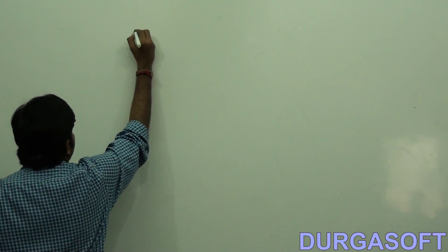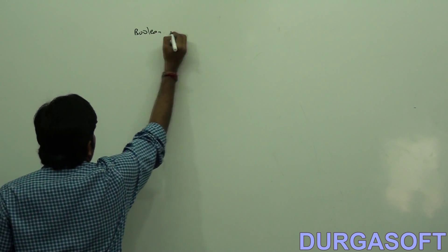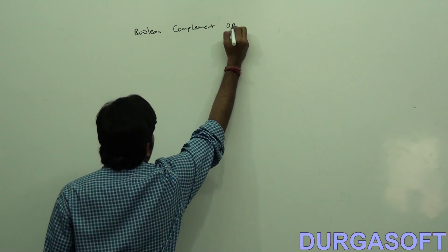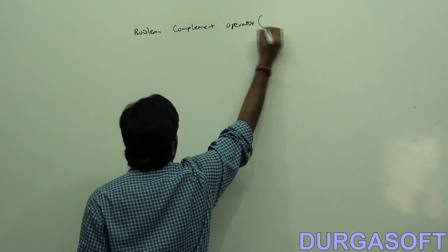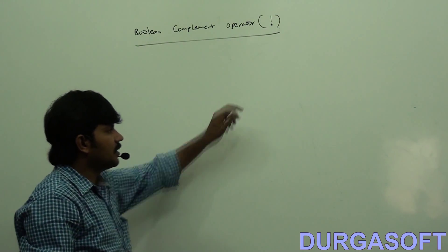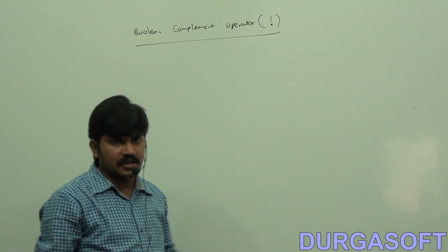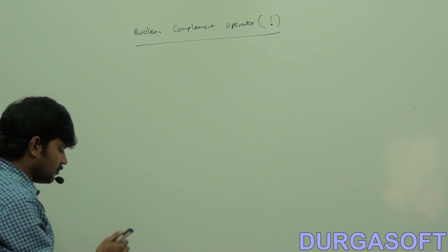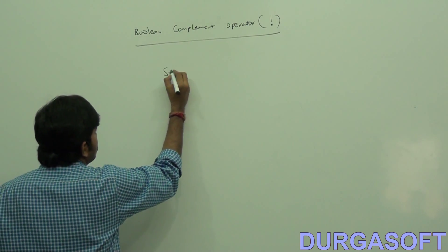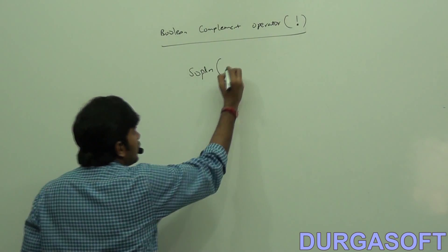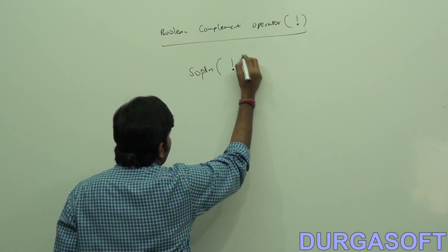Boolean complement operator — this is the symbol. Now, here just observe: system.out.println of negation of 4.